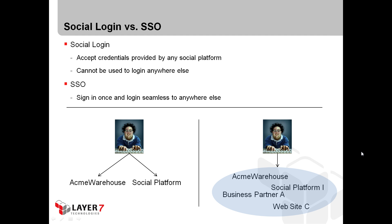Single sign-on would usually mean the user logs into one application and if he chooses to visit a different website, he should be able to log in seamlessly without the need to provide his credentials again. That would be single sign-on. In this example, if the user would log in to Acme Warehouse, single sign-on would mean he may also be able to log into a social platform, a business partner, or a different website. This is not the case with social login.